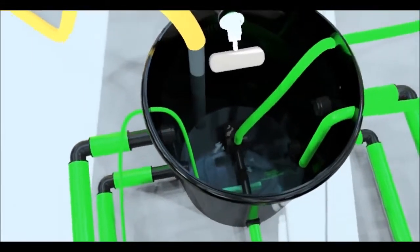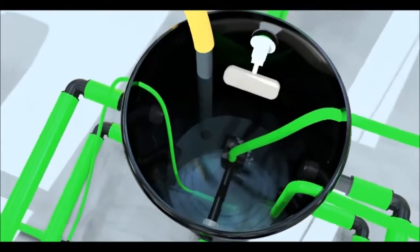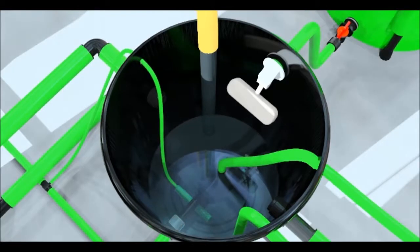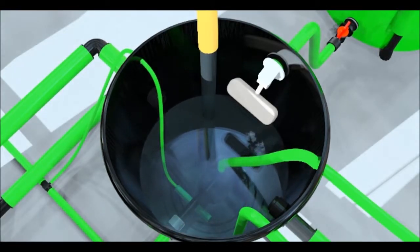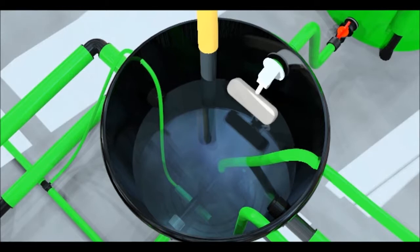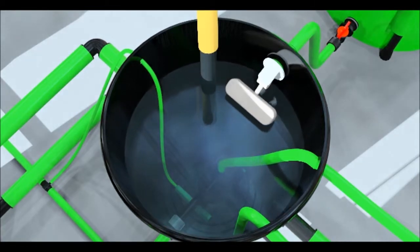You are now ready to fill the system with water. Fill the pots using a hose pipe. While the system is filling, you can add a small amount of nutrients to the header pot. When the float valve reaches the level position, the system is full.